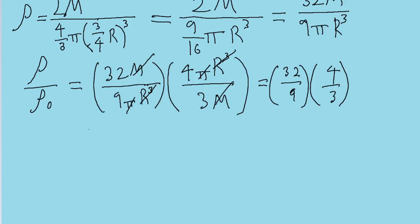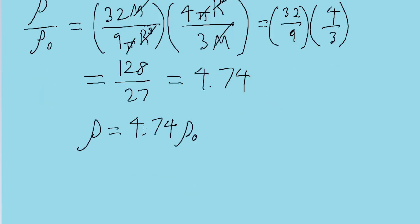And if we simplify that further, or put that into a calculator, then we find that that's equal to 128 divided by 27. Or in decimal form, that's about 4.74. So that means that ρ is equal to 4.74 ρ₀. And that is the answer to this problem.